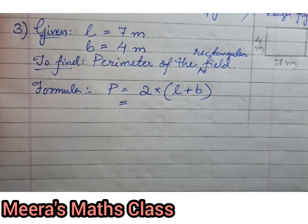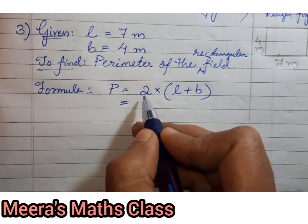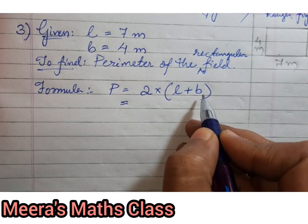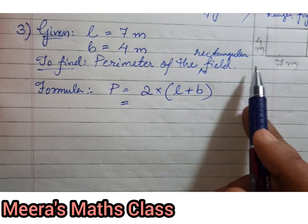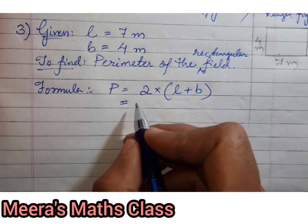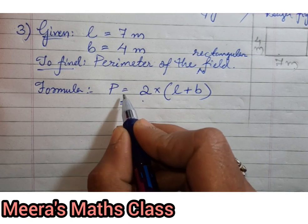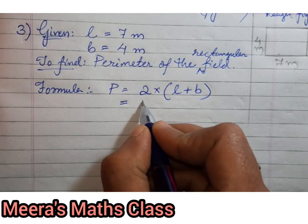Then formula is equal to P is equal to 2 times (L + B). Why? Because we are going to find out the perimeter of a rectangular field. Now, equal to... You have to put just below it.